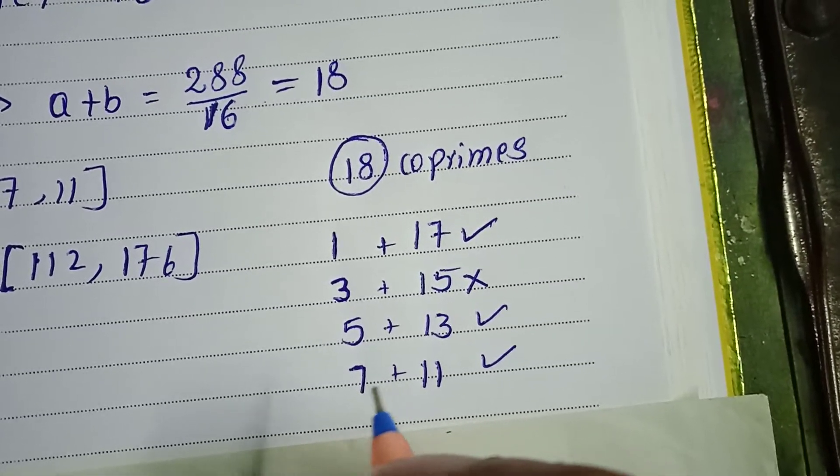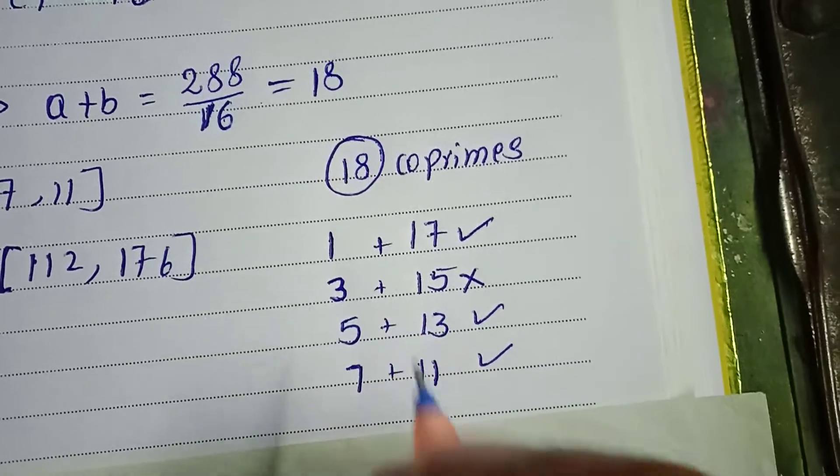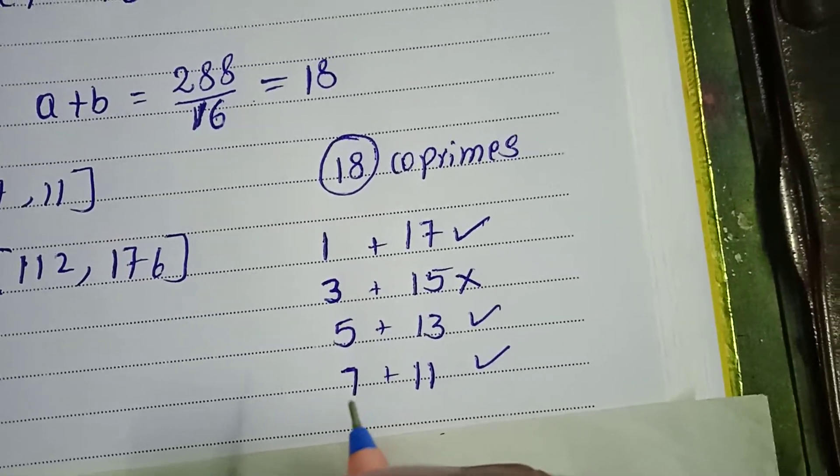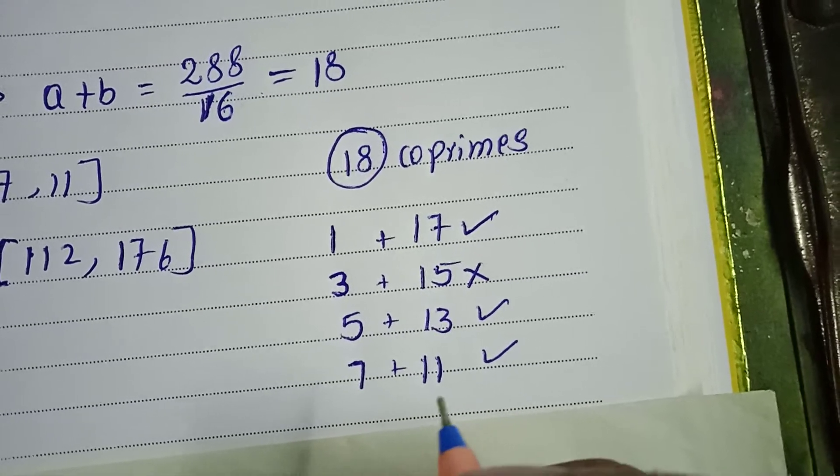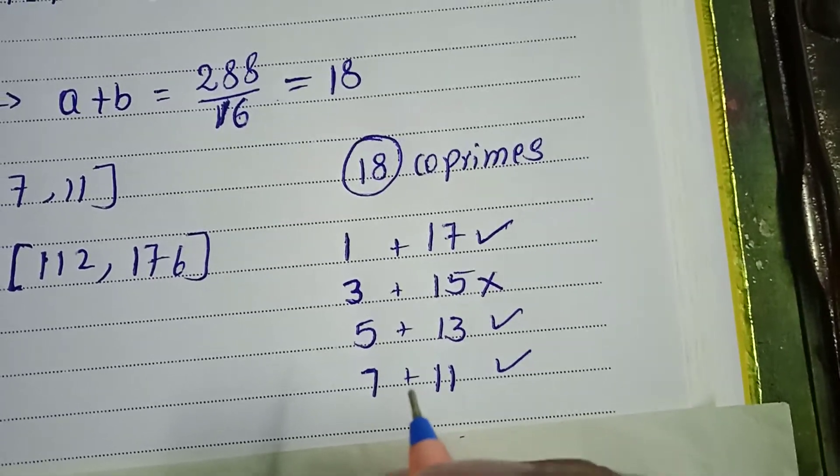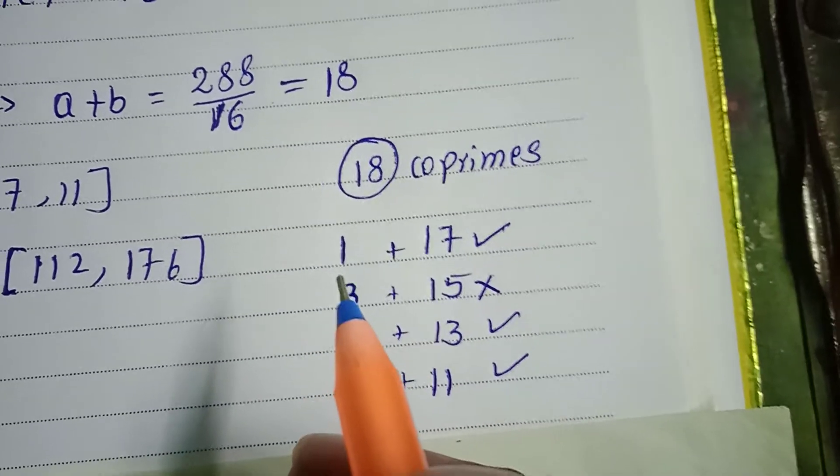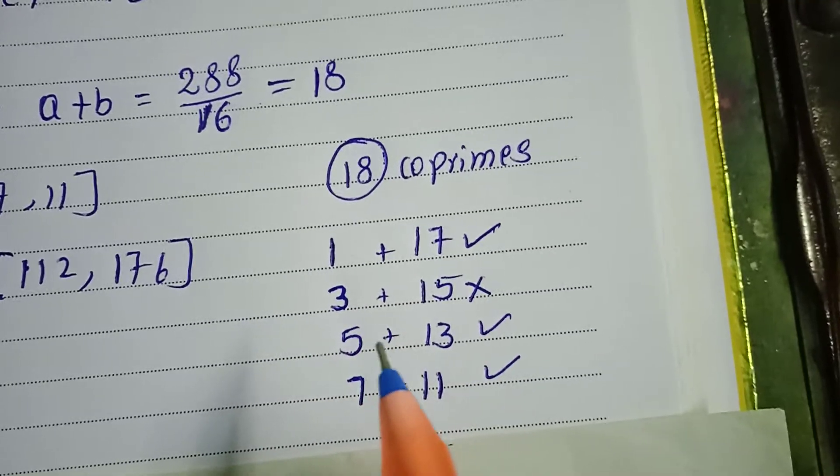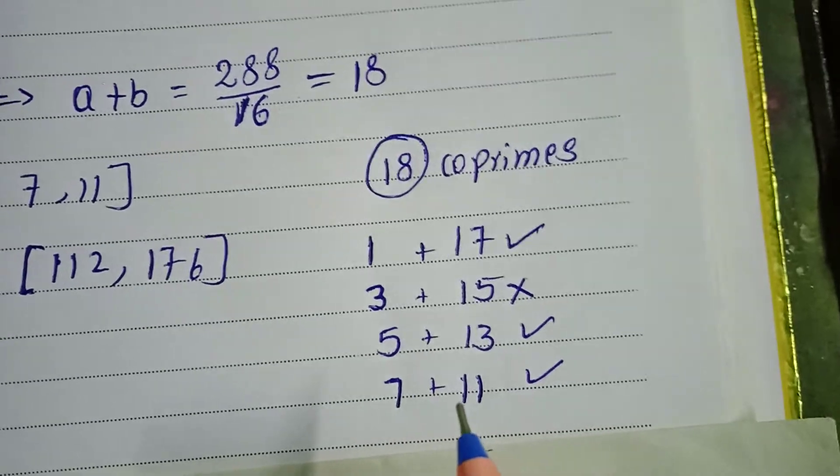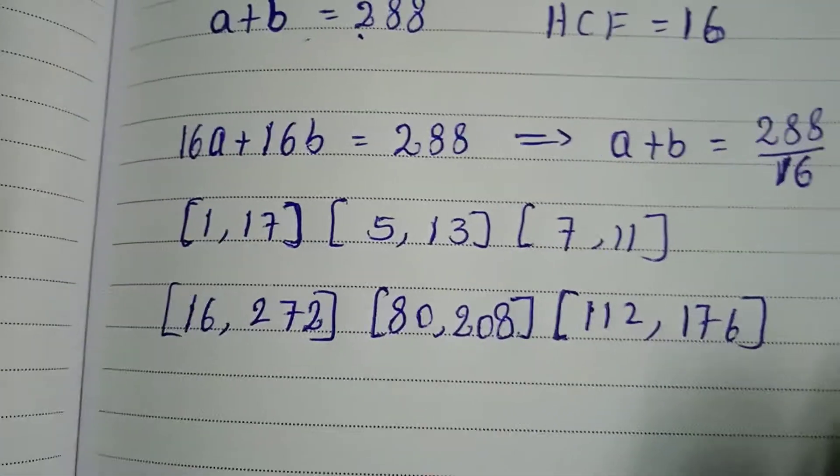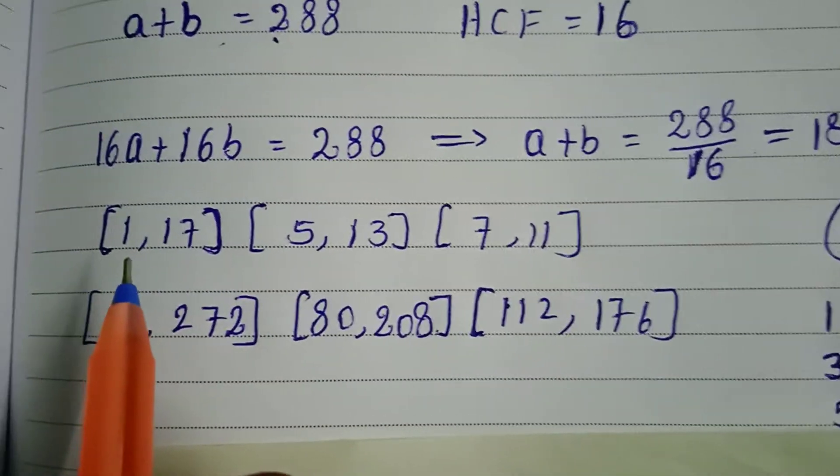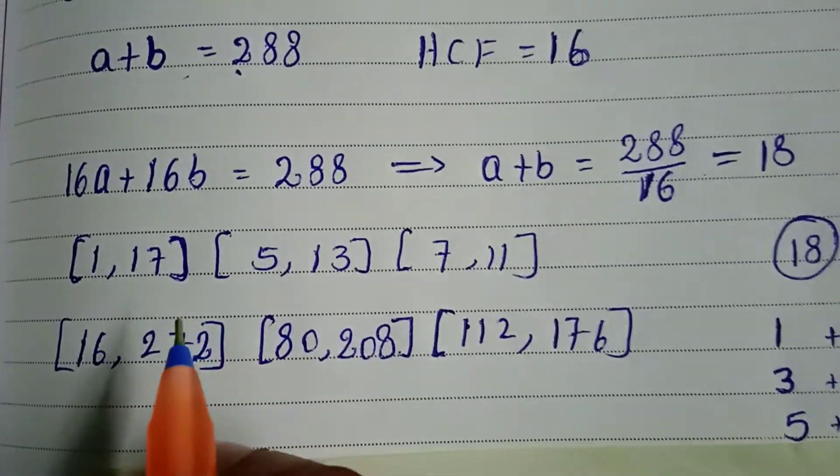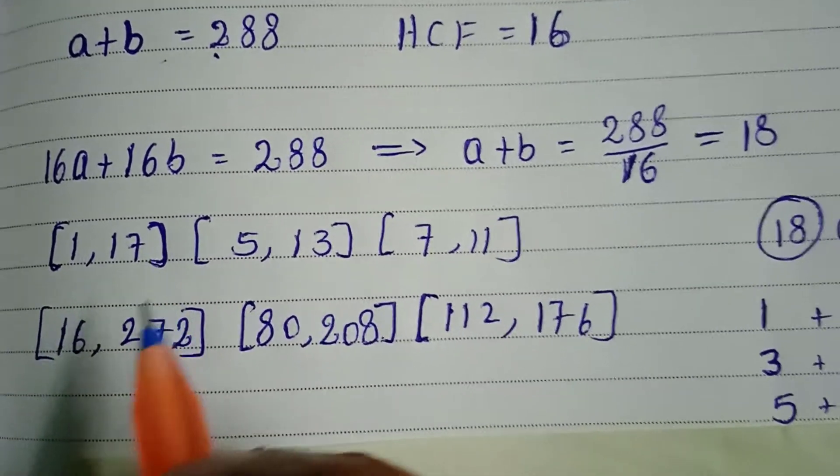Next we check 11 and 7, which is 18, but that's already repeated. So we have three pairs that give us the answer: (1, 17), (5, 13), and (7, 11).